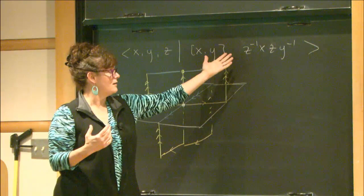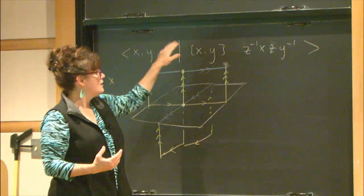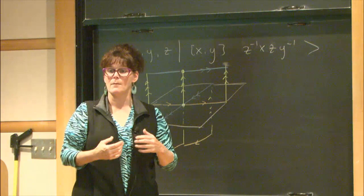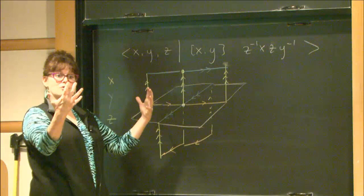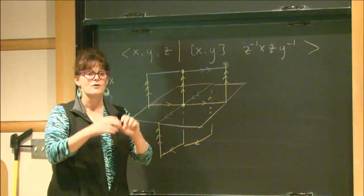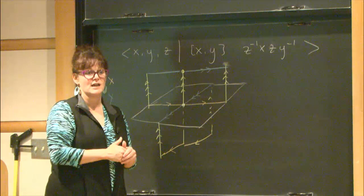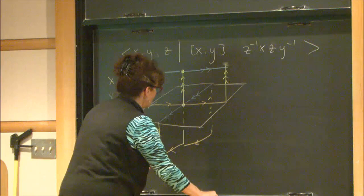For two-complexes in particular, there's a very easy way to think about what the CAT(0) condition means when I draw a combinatorial object like this — if I glue together polygons. I'm thinking about things that come from group presentations. When you have a finite presentation, your relators can be read around the edges of a finite-sided polygon. I want to think about gluing those polygons along isometries on their edges. When I do that, I build a combinatorial complex and then metrize each cell as a Euclidean polygon.